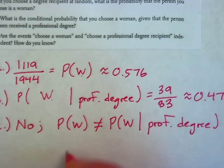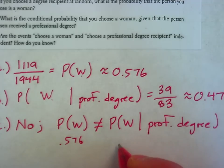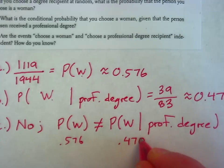So those two would have to be the same. This one is point five, seven, six, and this one is point four, seven, zero.